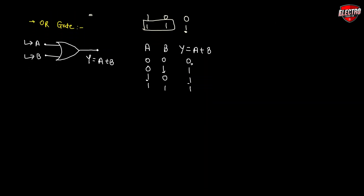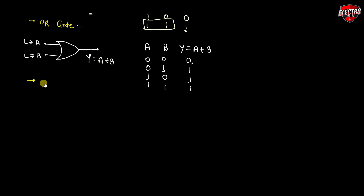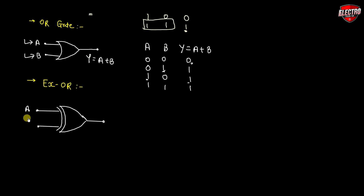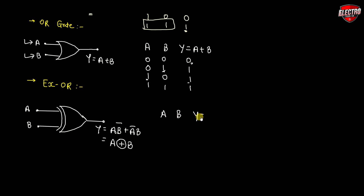Next is the XOR gate, which is a derived gate, also called a special logic gate. The symbol for the XOR gate is given like this. Inputs are A and B. The output for the XOR gate is given by the Boolean equation: Y = A·B̄ + Ā·B, also written as A ⊕ B.